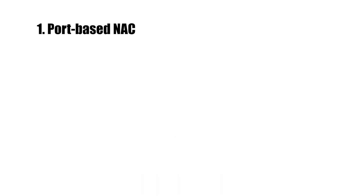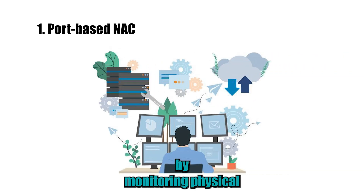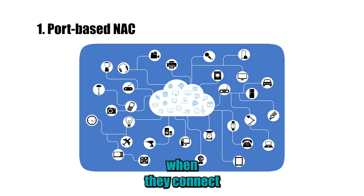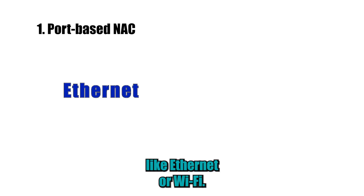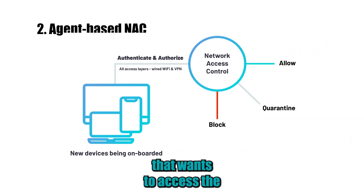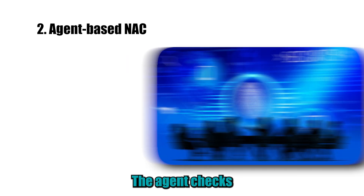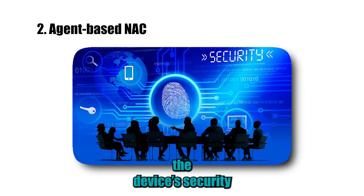Types of network access control solutions. First, port-based NAC: this solution controls access to the network by monitoring physical ports. It checks devices when they connect through those ports, like Ethernet or Wi-Fi. Second, agent-based NAC: this solution requires installing an agent on every device that wants to access the network. The agent checks the device's security status and ensures it complies with the company's policies before granting access.